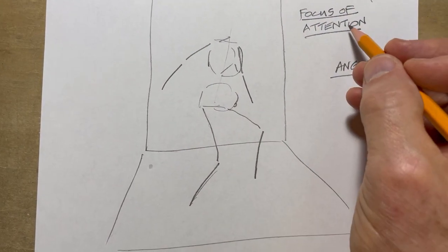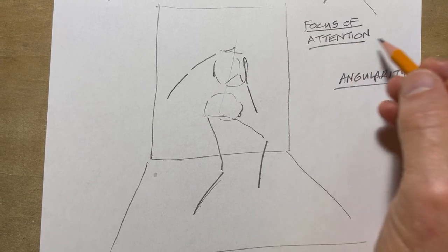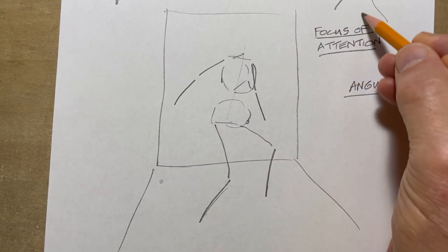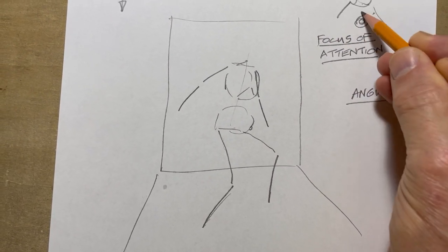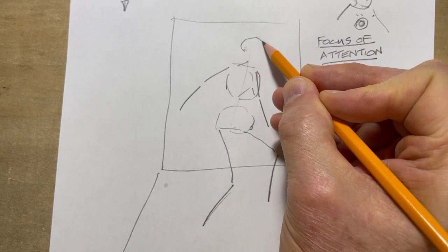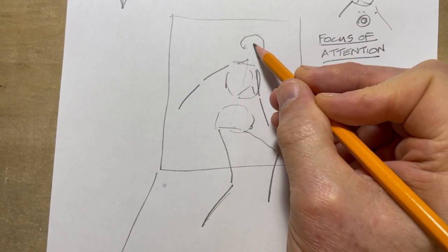So focus of attention, where is this figure looking? Well, how about over here? How about there's something over here, right? So that means the head will be turned like so, probably to look toward it. There's the ear to show which way it's looking.